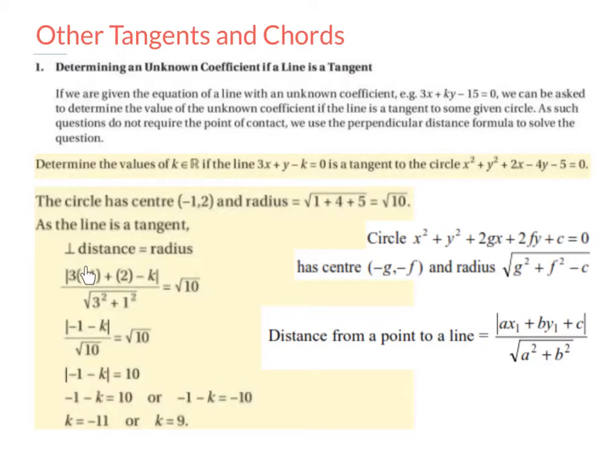Simplifying, 3 by minus 1 is minus 3. Minus 3 plus 2 is minus 1. Don't forget the modulus sign. Bring down the minus k. The square root of 3 squared plus 1 squared is root 10. And this is still equal to root 10.